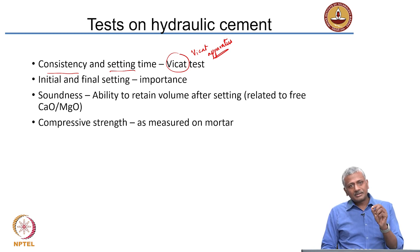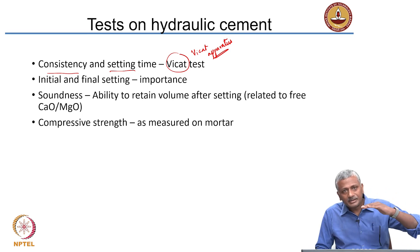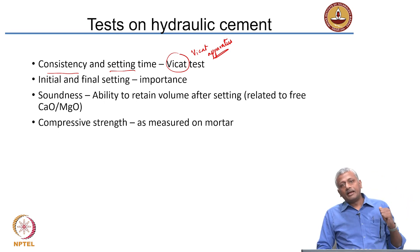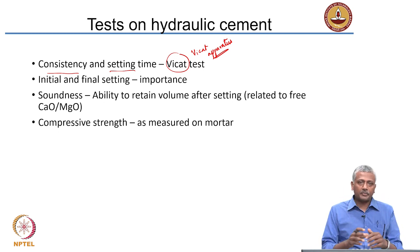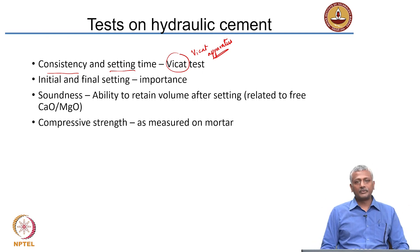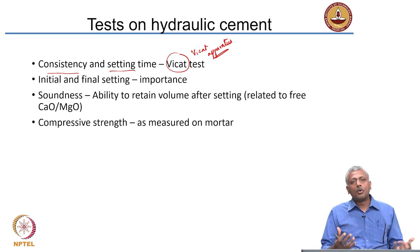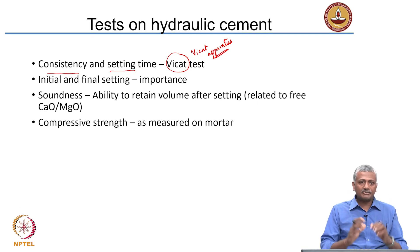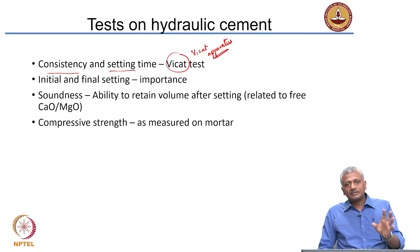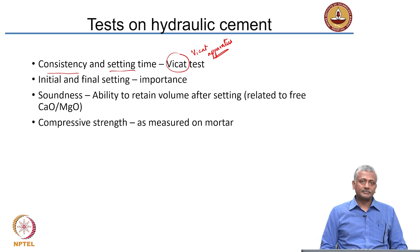Initial set is basically the point at which the concrete just starts to set — reactions just gain in speed. Final setting is the point where the concrete has gained its shape or form and will not change beyond that. Initial set is the time available for you to work with the concrete; beyond that you cannot mold it. Final set is the point beyond which the concrete has a definite shape. However, concrete continues to develop strength beyond final set — as long as water is available, concrete will continue to develop strength.